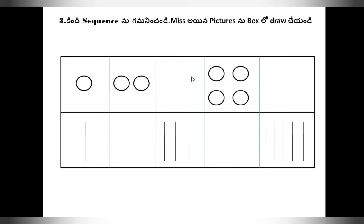Our children can recognize the sequence and draw it easily. Because in this activity, the purpose is to draw the circle or line — it will improve the movement of the fingers of the children. That's why our government gives this type of activity.